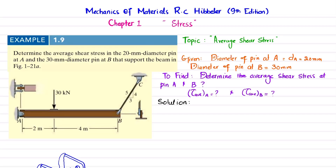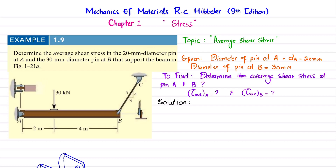Welcome back. In this video, we are going to solve example 1.9 taken from chapter number 1, Stress, from the book Mechanics of Material by R.C. Hibbeler, 9th edition. The topic we are covering is average shear stress.